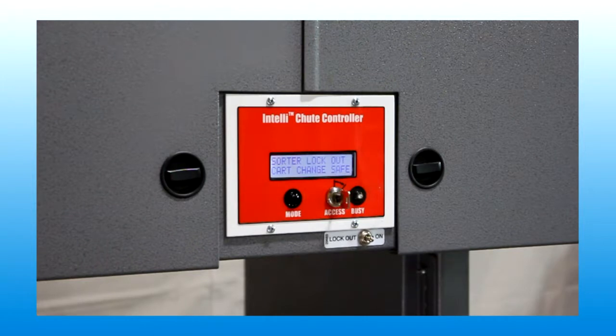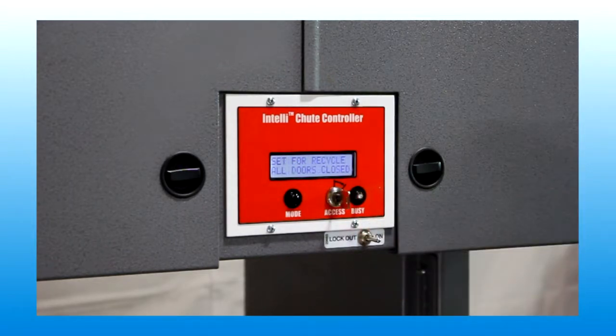After completing operations requiring chute lockout service mode, set the toggle switch back to the enable position to restore normal intake door access.